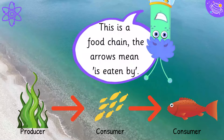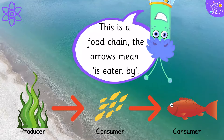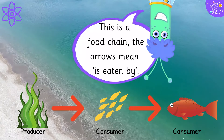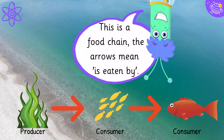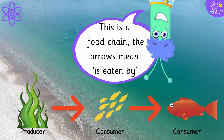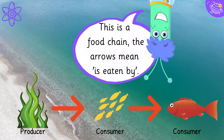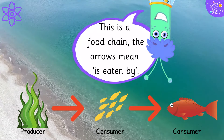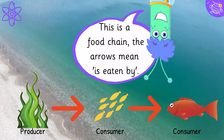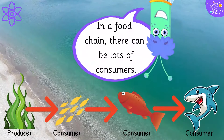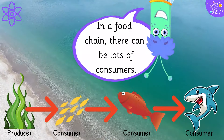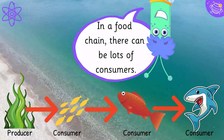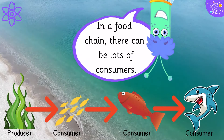This is a food chain. The arrows mean 'is eaten by.' In a food chain there can be lots of consumers.